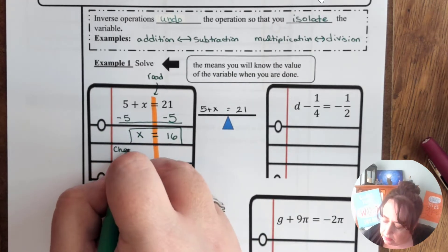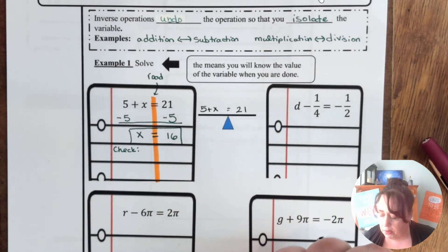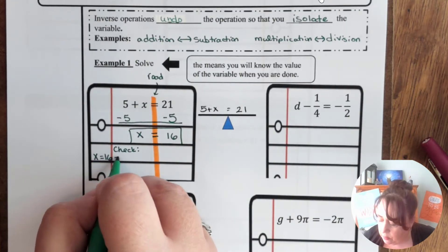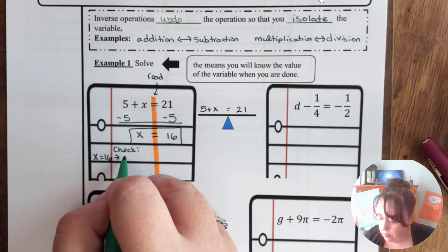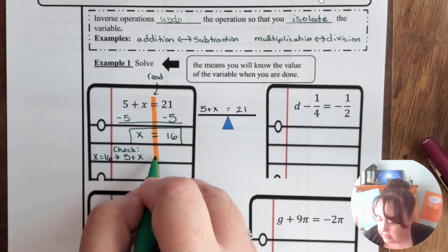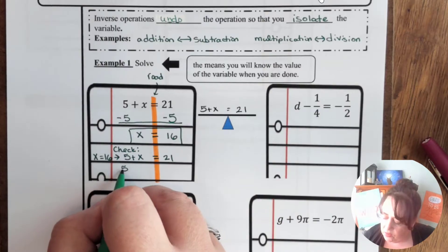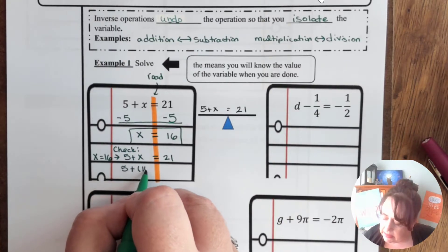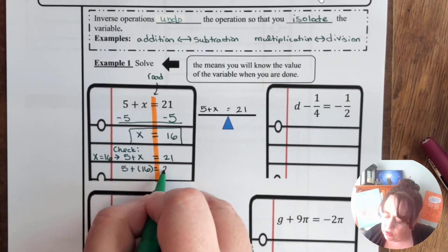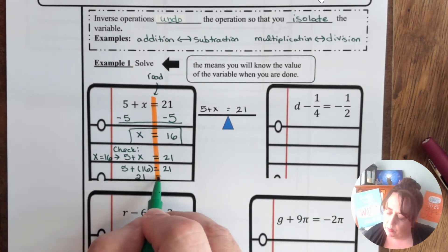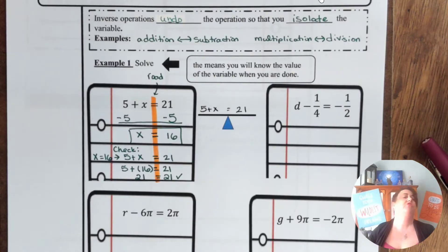You can check your work and you probably should check your work. So that means x is equal to 16. We put that into 5 plus x equals 21. So 5 plus 16 equals 21. 5 plus 16 is 21. 21 does equal 21. So it checks out.